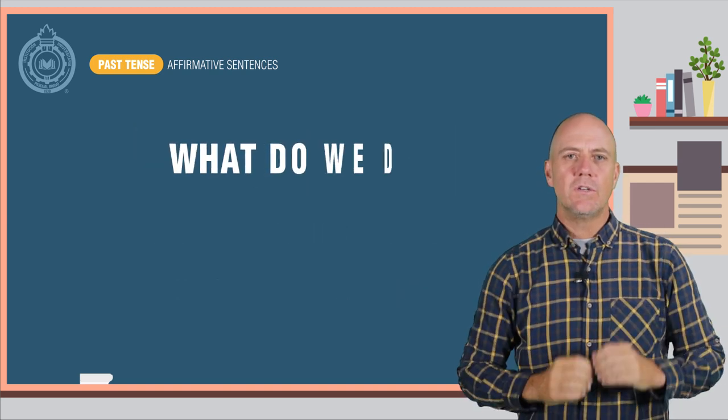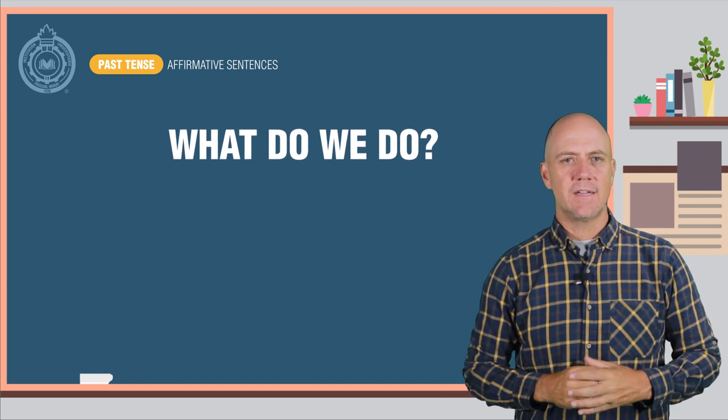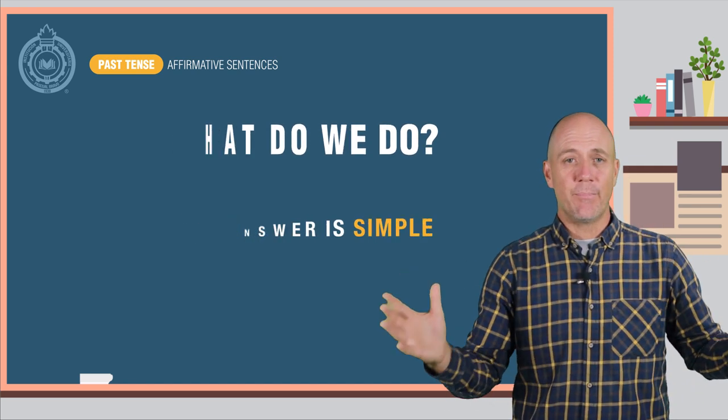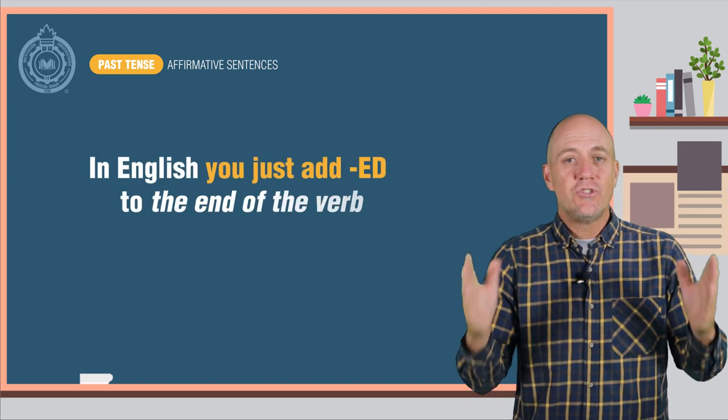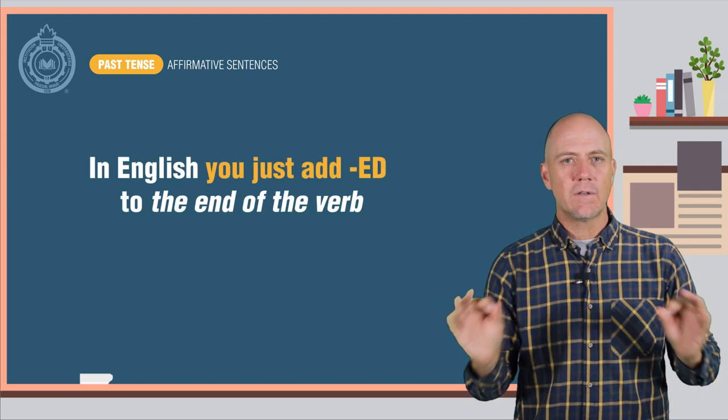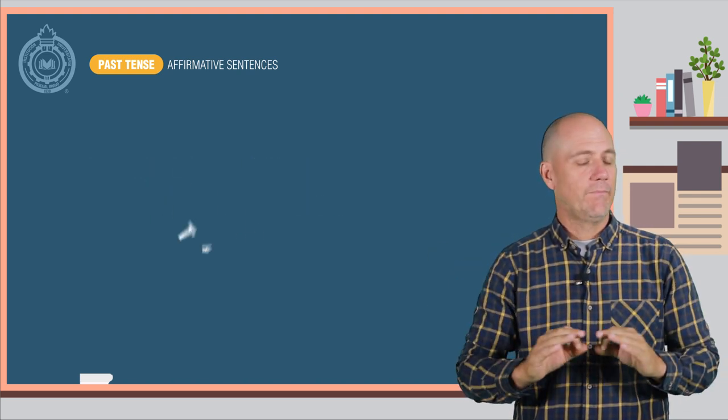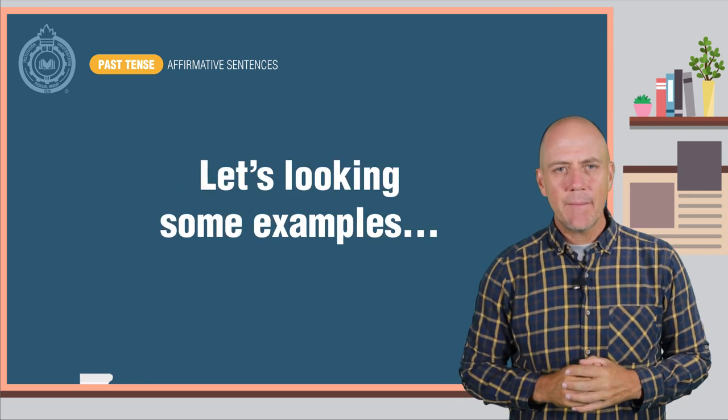So what do we do with verbs in English to form the past tense? The answer is simple. In English, you just add "-ed" to the end of the verb. That's it. That easy.